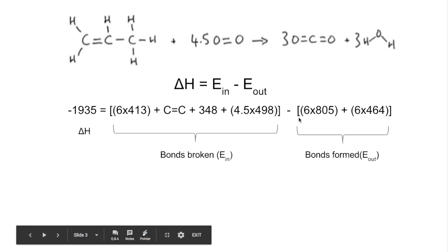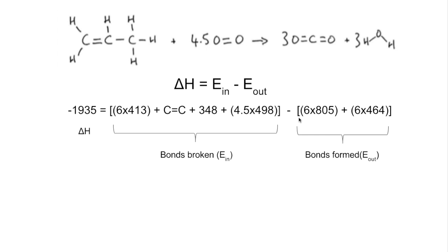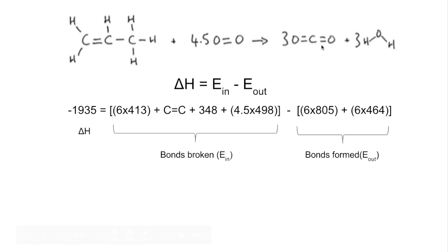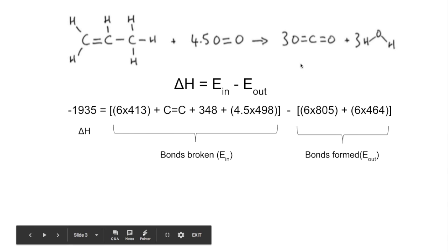When the bonds form in the products, we're going to actually make six C=O double bonds because each carbon dioxide has two C=O double bonds in. So three moles would make six and we're also going to make six O-H bonds. So there's the numbers there for that.